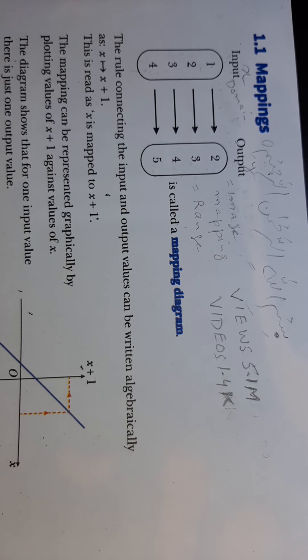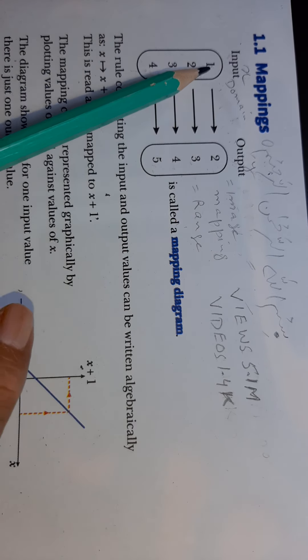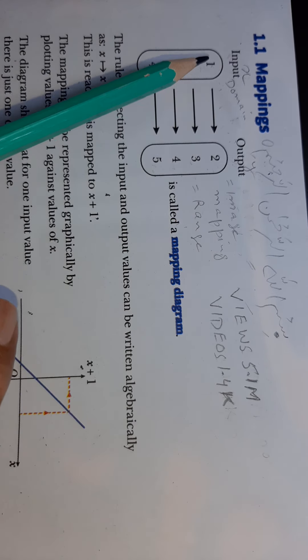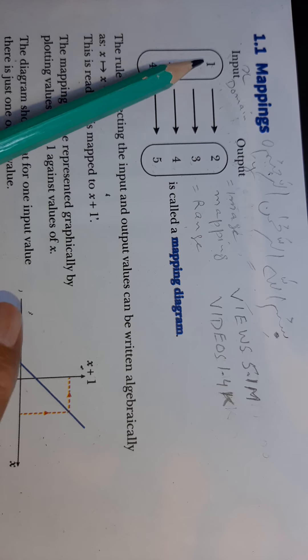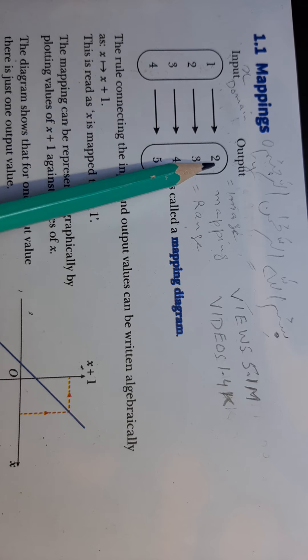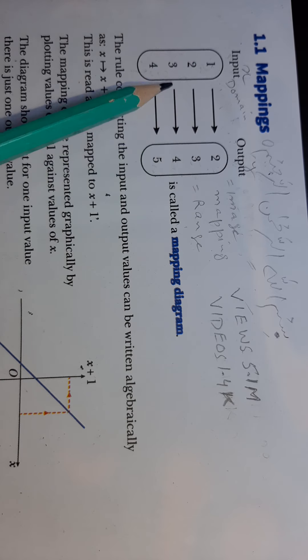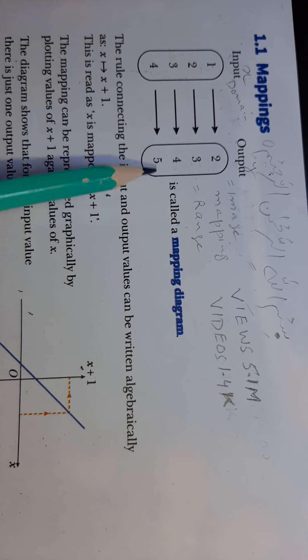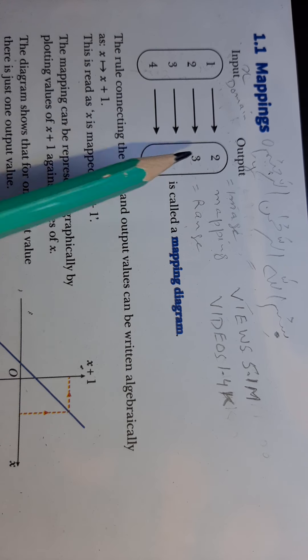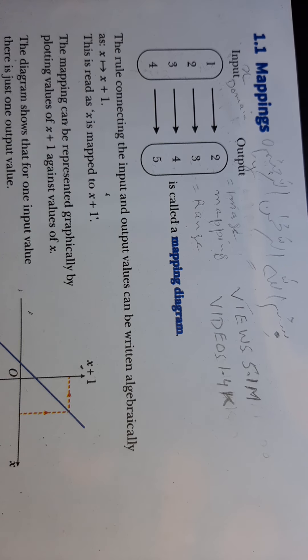Here, one maps to two, two maps to three, three maps to four, and four maps to five. This is a mapping diagram.